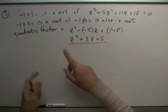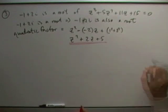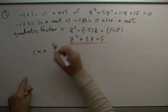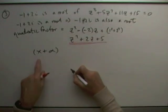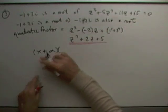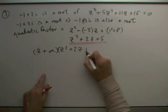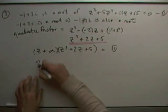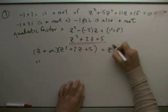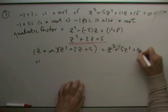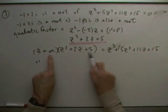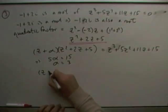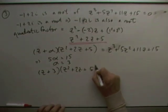Then you can find the remaining linear factor by dividing that into the original polynomial, or use synthetic division. I've got one more factor — call it (z − alpha) — times z squared plus 2z plus 5, which should equal z cubed plus 5z squared plus 11z plus 15. If that's the case, then 5·alpha must make 15, which means alpha equals 3. So the final factorization is (z + 3) times that irreducible quadratic.